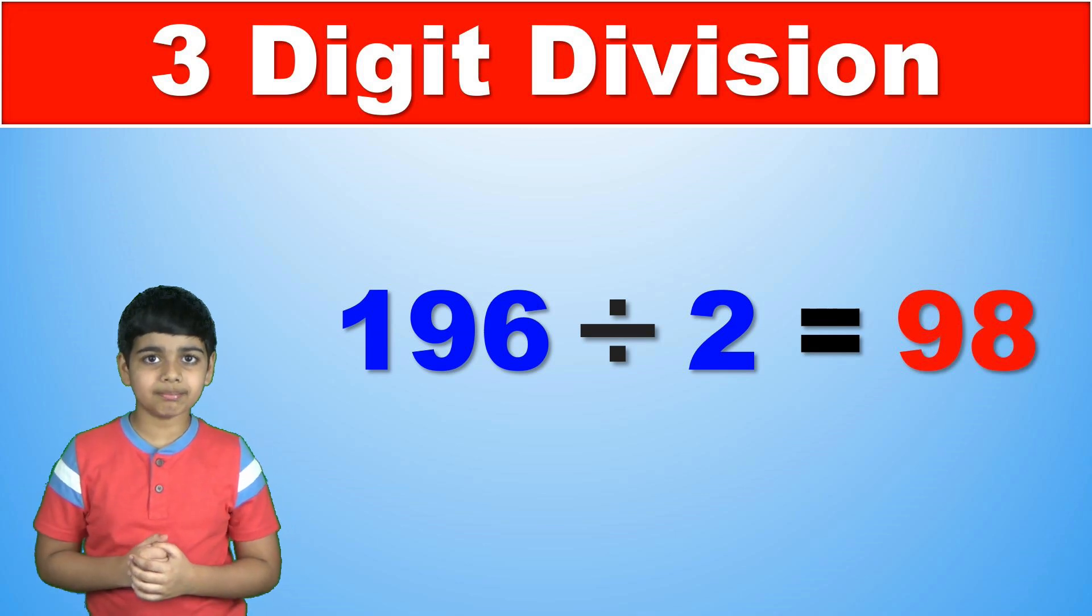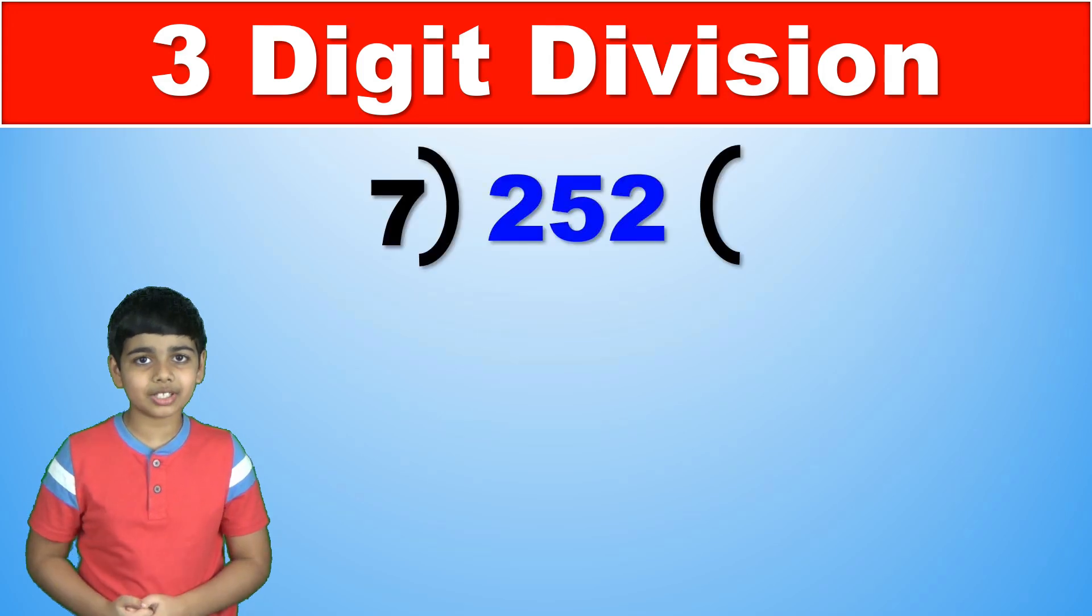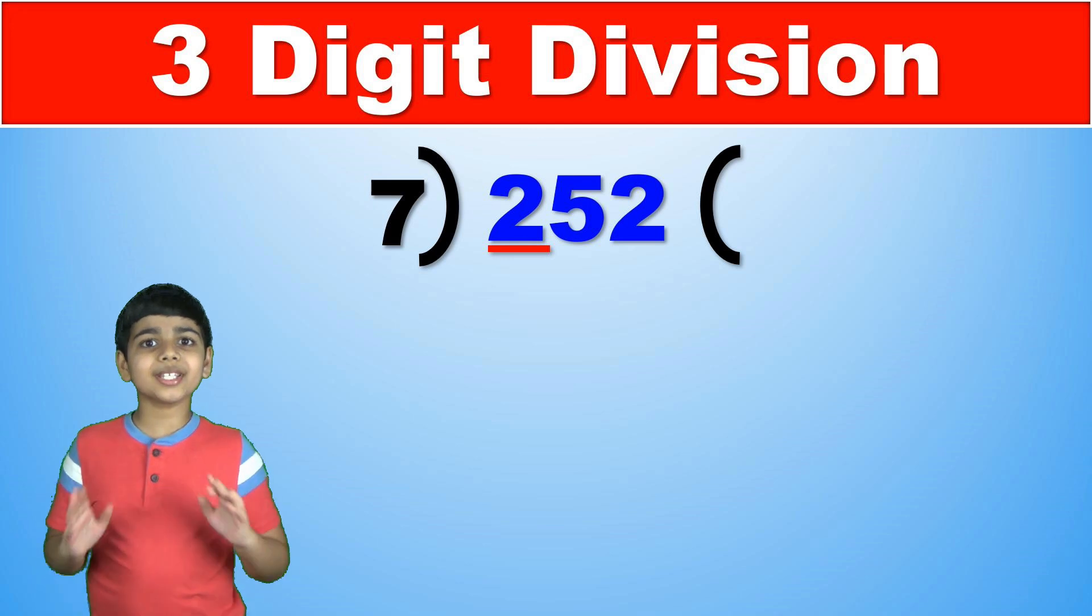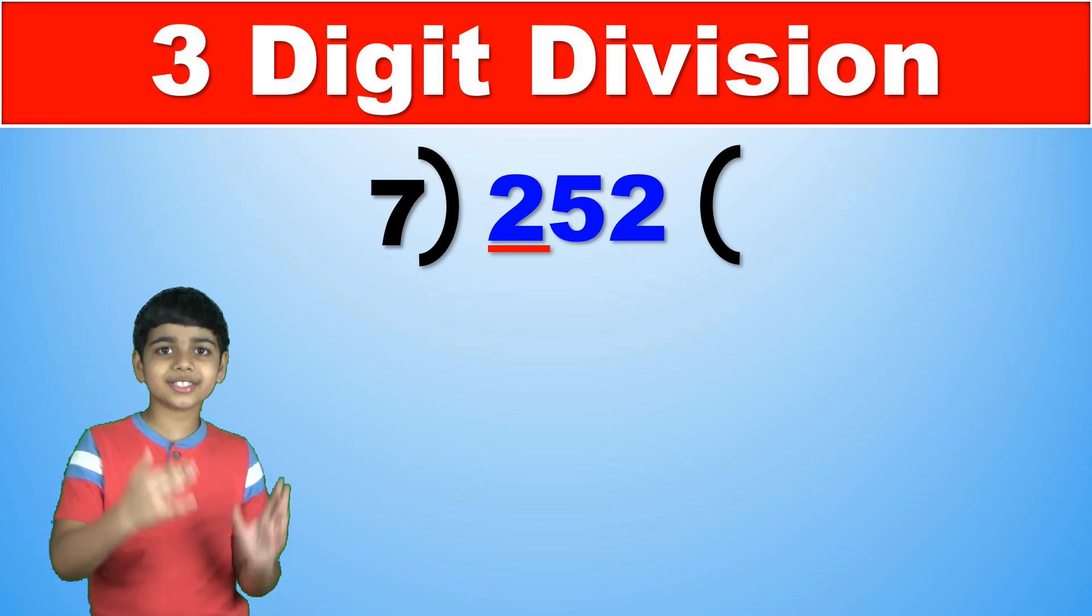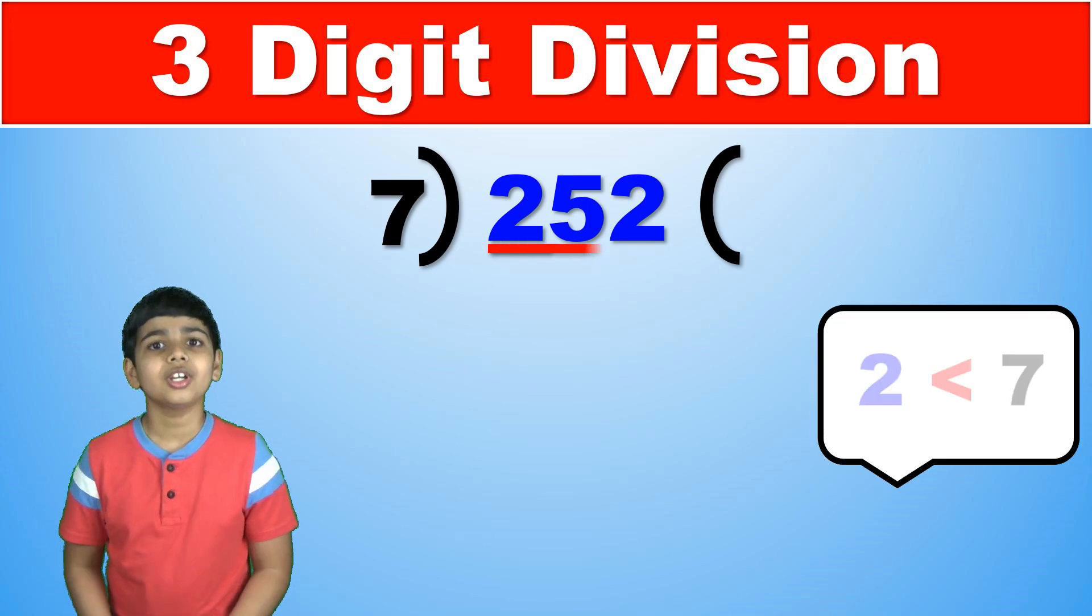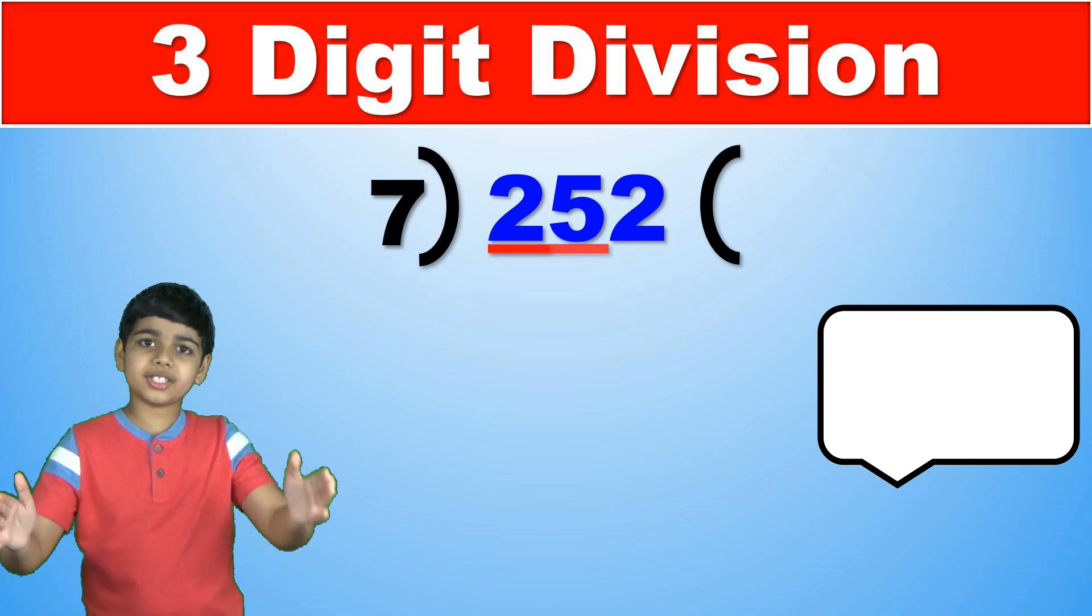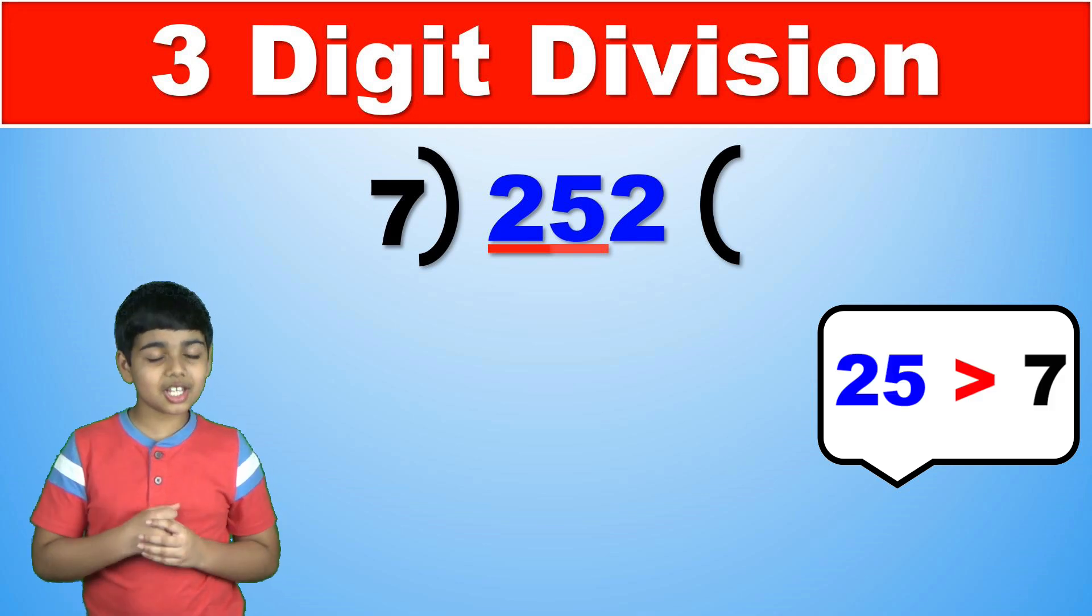Let's do another one. Say 252 divided by 7. Now we look at the first digit that's 2 and we ask ourselves is 2 greater than 7? No, 2 is lesser than 7. So we extend the line out to the next digit so instead of 2 it's 25. Now 25 is obviously greater than 7.